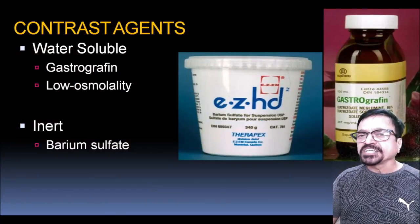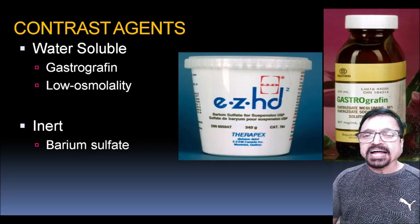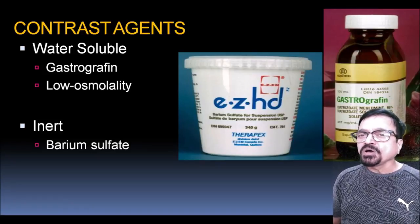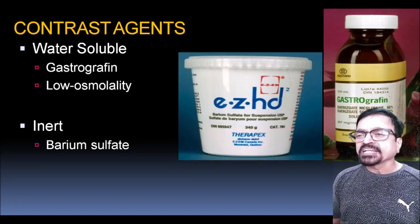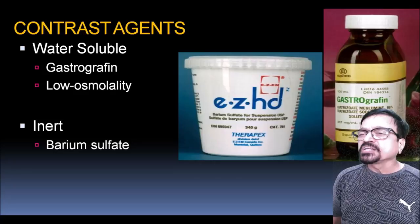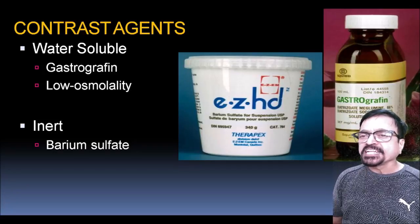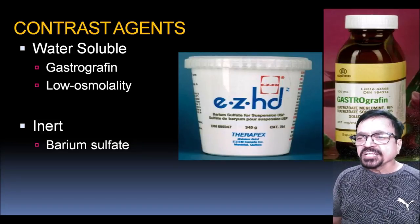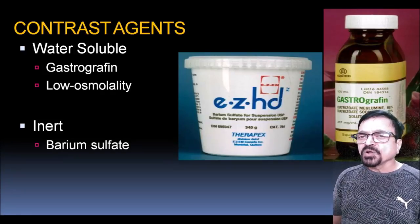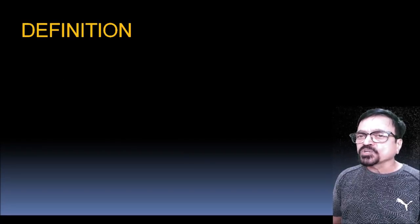For barium swallow examination, we use two types of contrast. One is water-soluble and the second is inert — barium sulfate. Water-soluble contrast such as Gastrografin or low-osmolarity non-ionic agents like Omnipaque are used especially when there is a suspicion of aspiration. If there is no risk of aspiration and the patient can swallow well, barium is used because it is very safe and inert. If there is a risk of aspiration, we use water-soluble contrast.